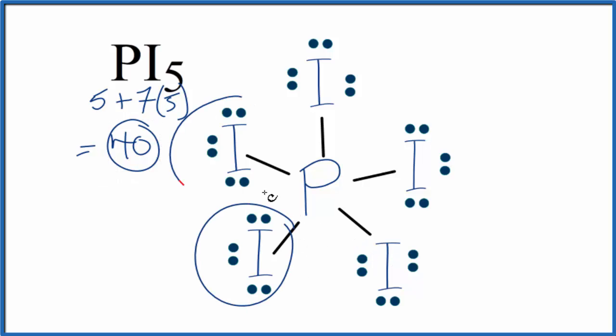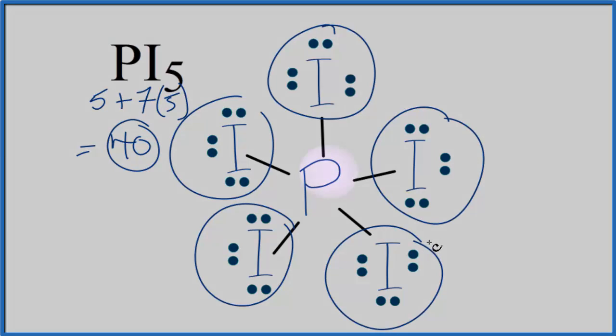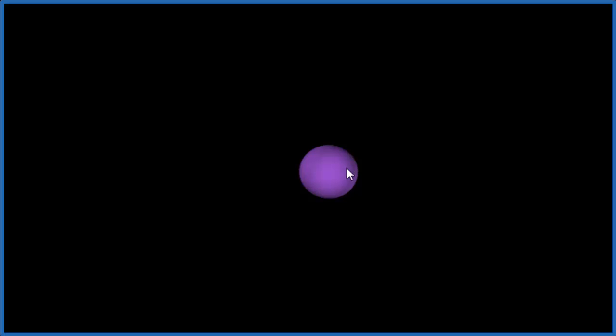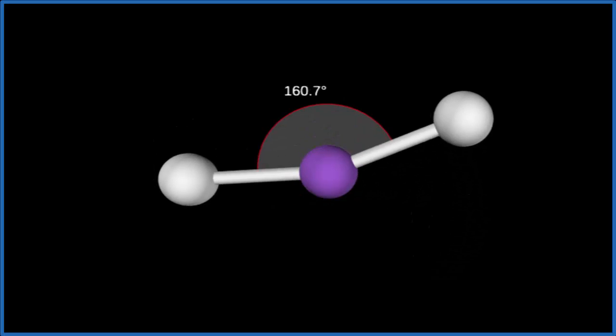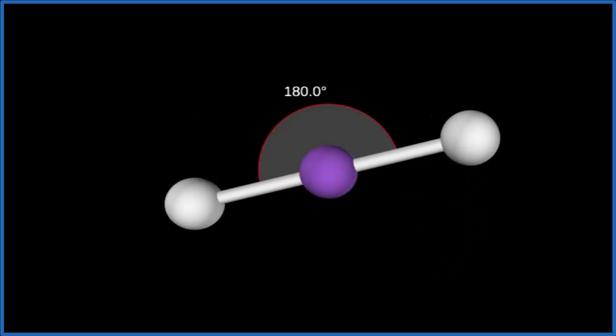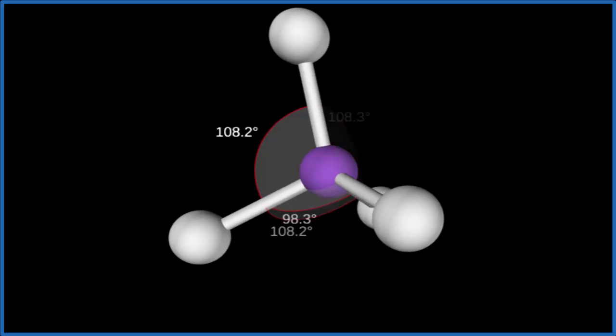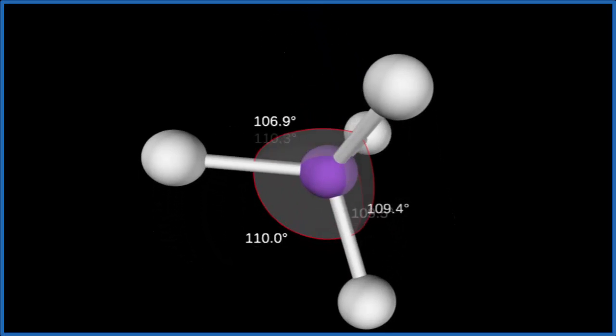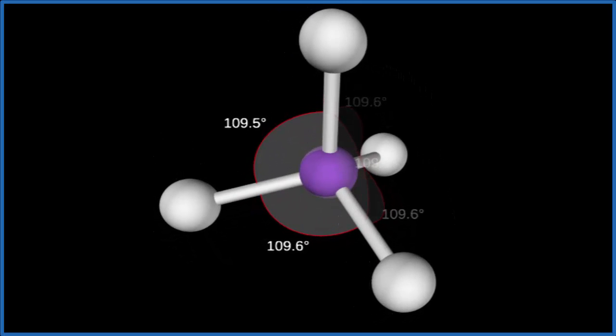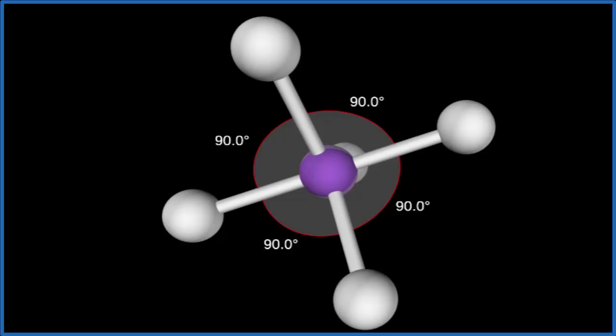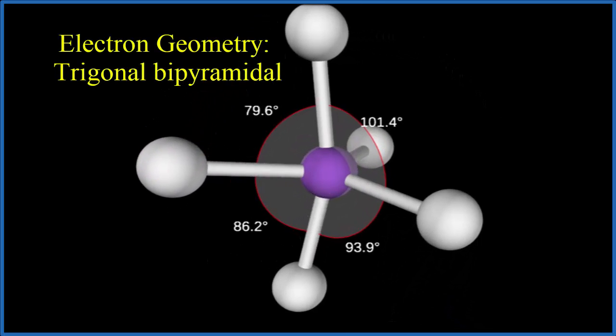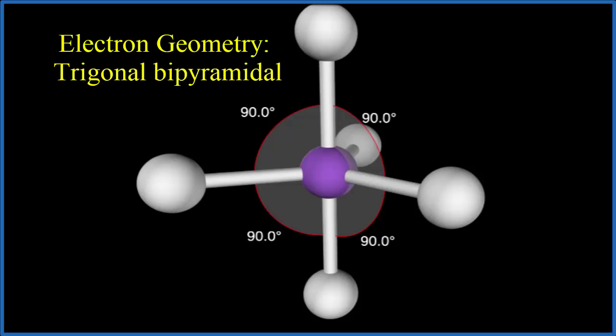We're going to add five iodine atoms: one, two—you see they spread out to be as far away as they can from each other—three, four. Right now we have a tetrahedral molecular geometry. Then we add the fifth one and we end up with what's called a trigonal bipyramidal molecular geometry.